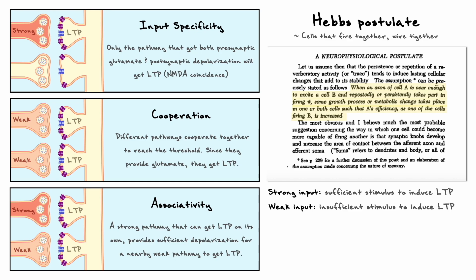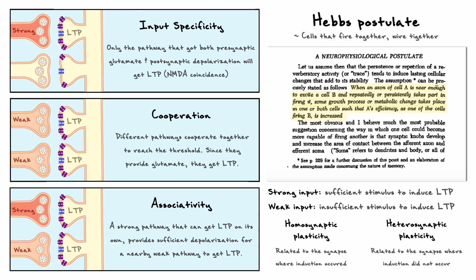An important definition to establish is homosynaptic versus heterosynaptic plasticity. If we consider two different pathways interacting on a postsynaptic cell, homosynaptic LTP means it occurs at the synapse where the induction happened. Heterosynaptic means the change in response occurs at the synapse where induction did not happen. For example, in the associativity scenario, if we only stimulate the strong pathway, from its perspective there will be a certain amount of homosynaptic plasticity, while from the perspective of the weak pathway there will be no heterosynaptic plasticity.